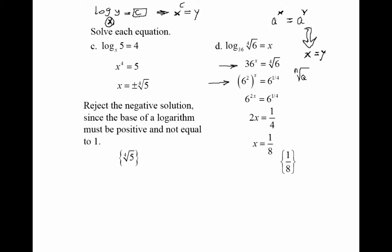We can write 36 as 6 squared to make the bases match. So we have 6 to the power of 2X equal to 6 to the power of 1 over 4. Using the property that if A to the power of X equals A to the power of Y and the bases are the same, then the exponents must be equal. So 2X equals 1 over 4, and solving for X gives X equal to 1 over 8.